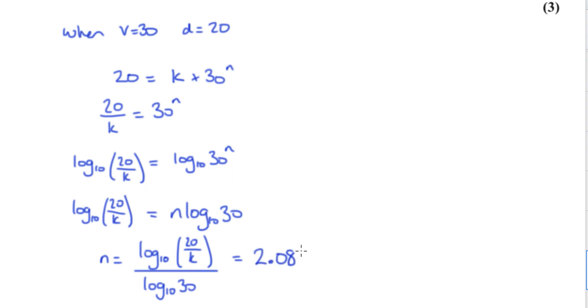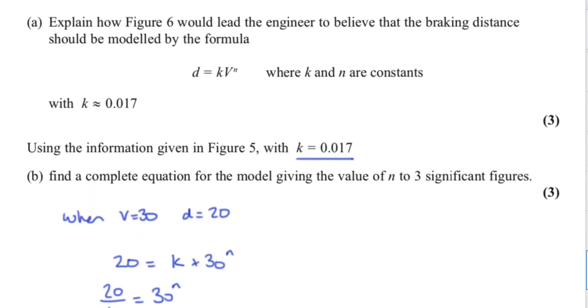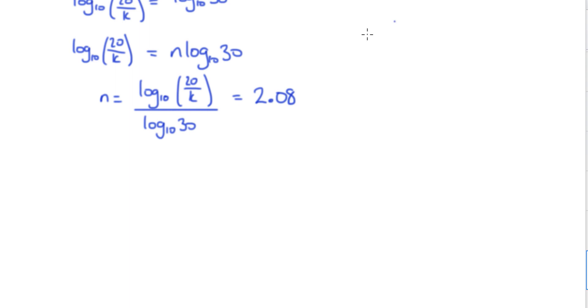Our n value is 2.07876... So find a complete equation. We need to write the actual equation down. So d is equal to 0.017 v to the power of 2.08.